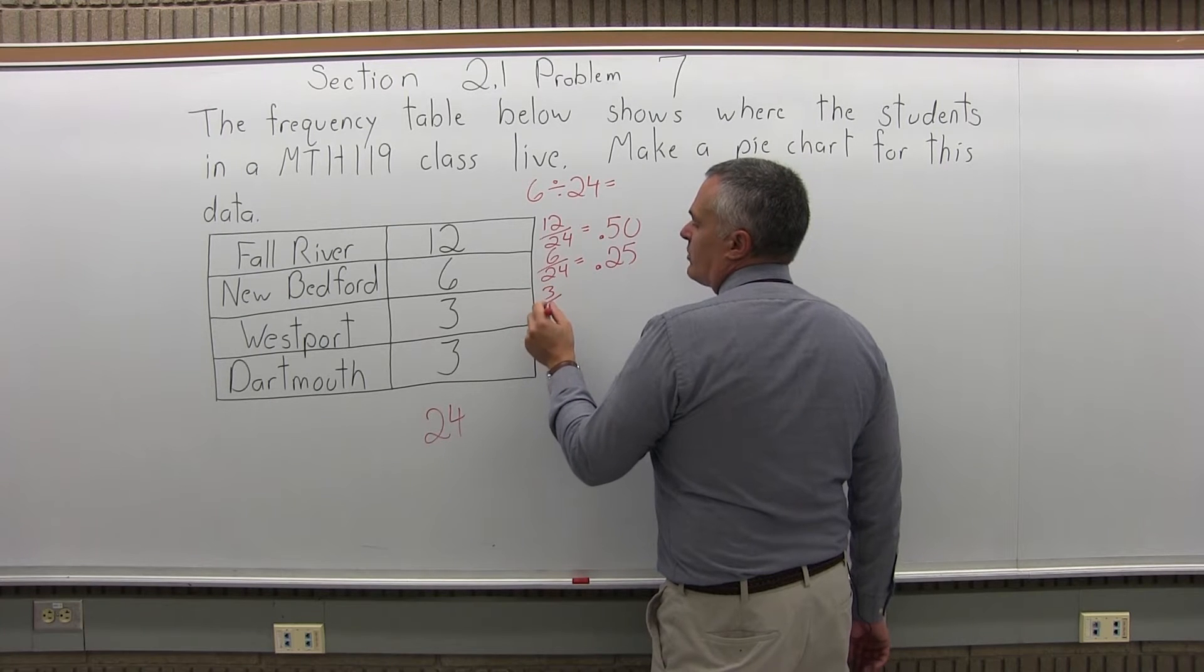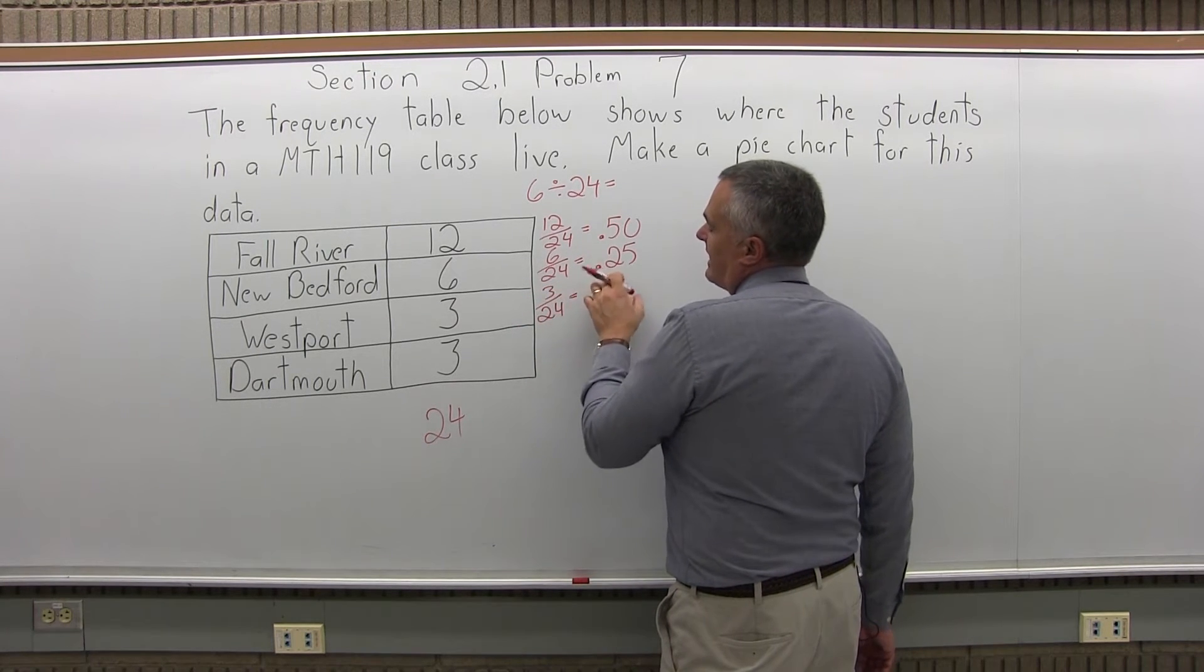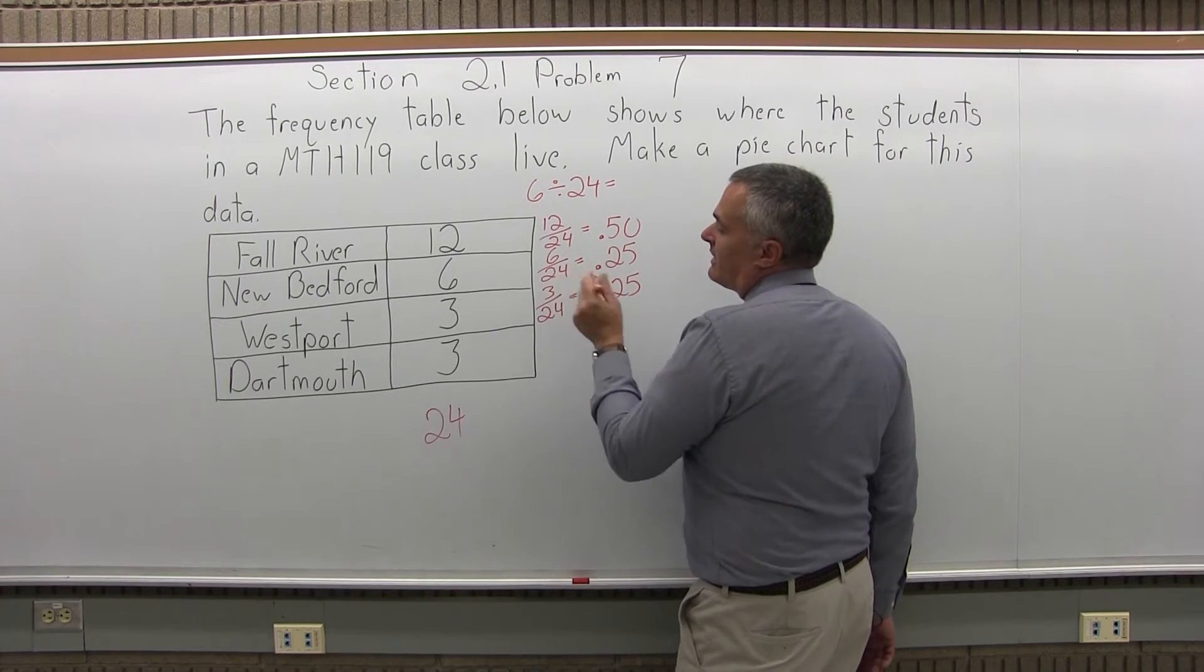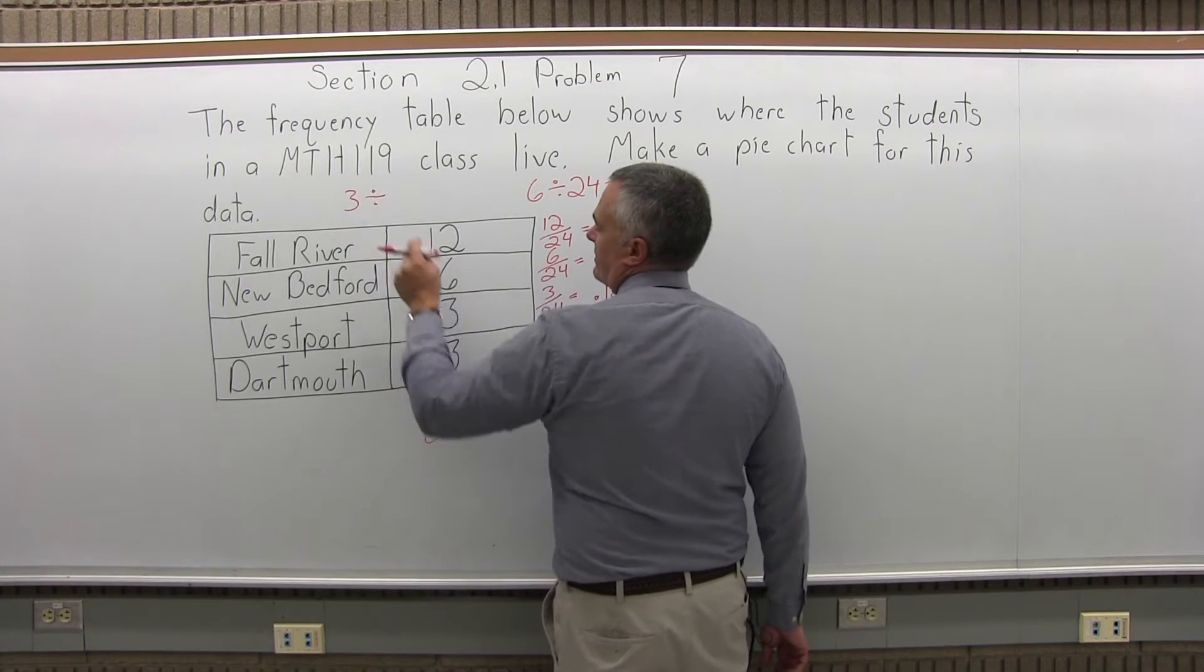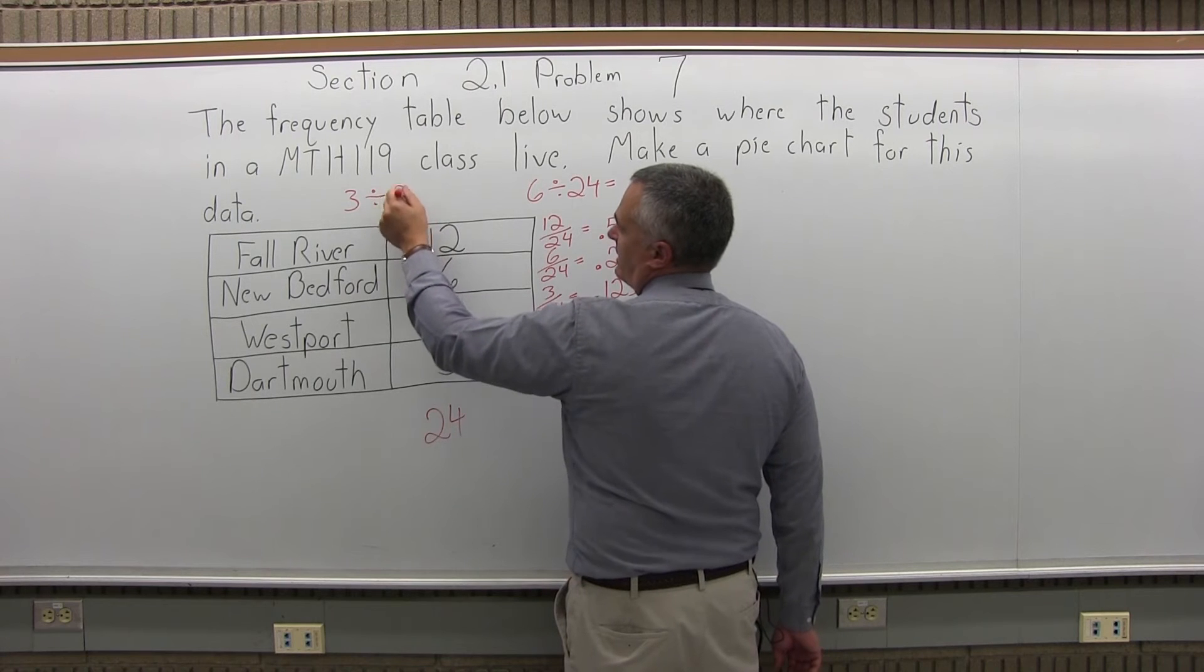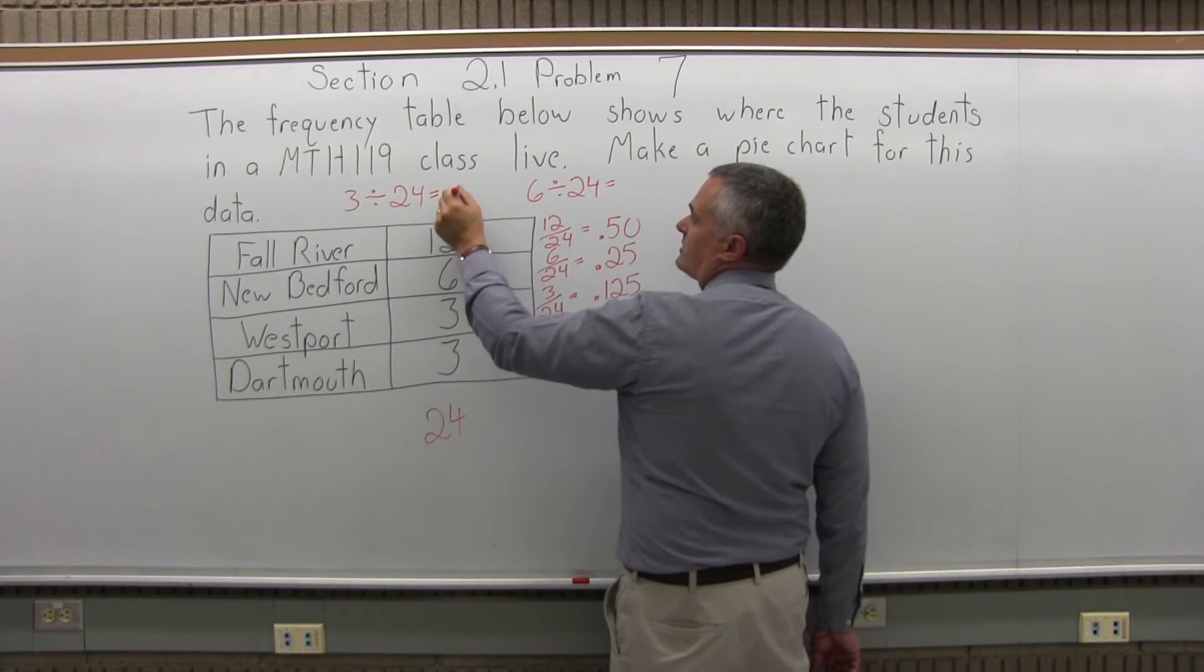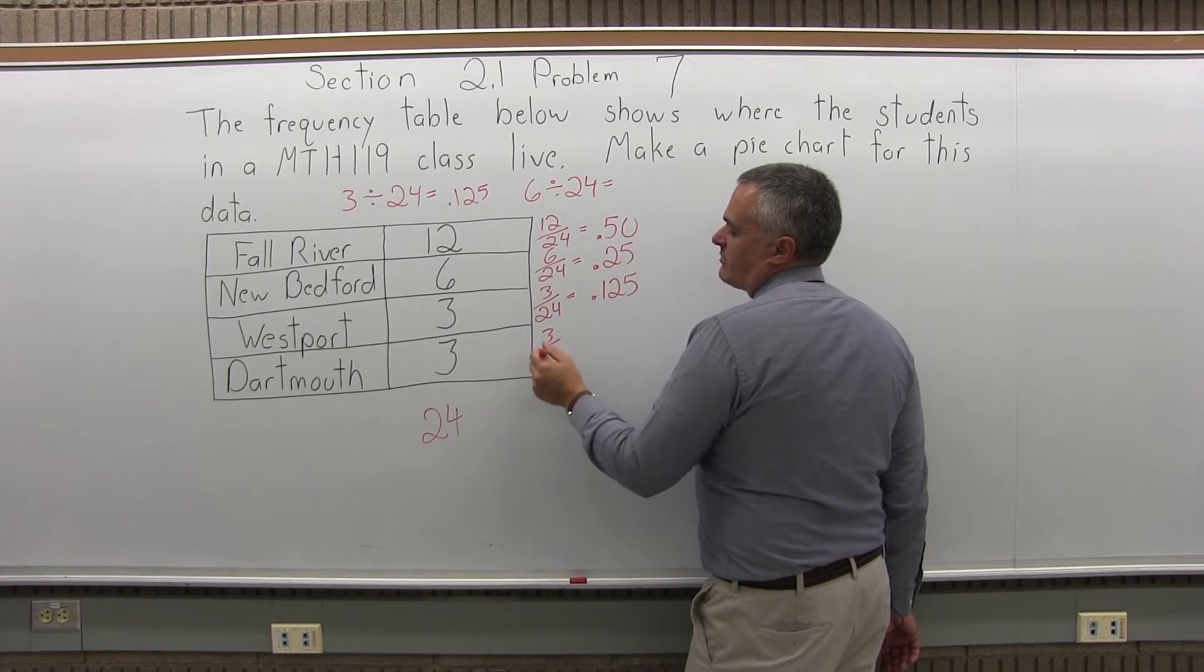And Westport, 3 over 24, that one's not as obvious. It's half of the 25%, so it would be 0.125. Again, if it's not something that's intuitive to you, just with your calculator, divide the top, how many people from Westport, divided by the total in the class. And the calculator will tell you it's 0.125, which means 12 and a half percent. Dartmouth is going to be the same percentage.